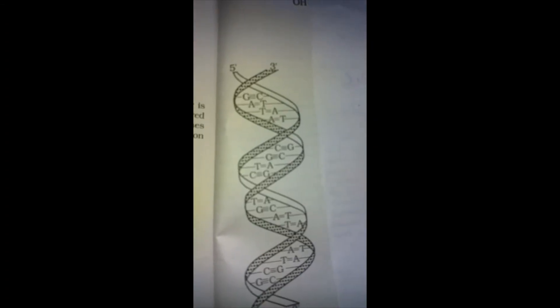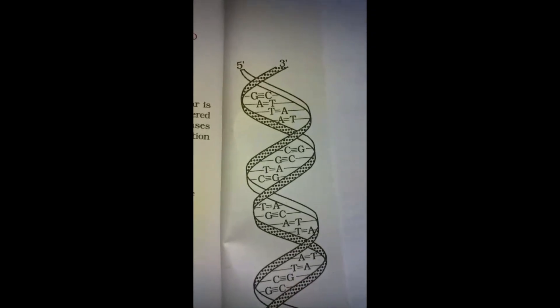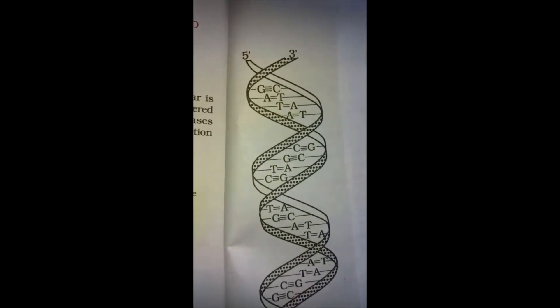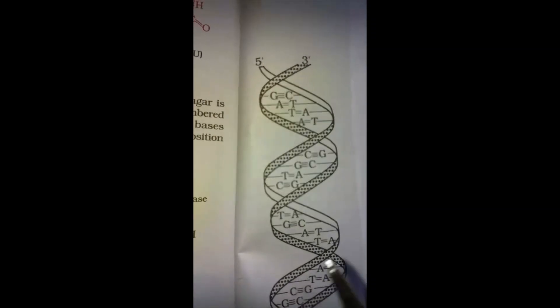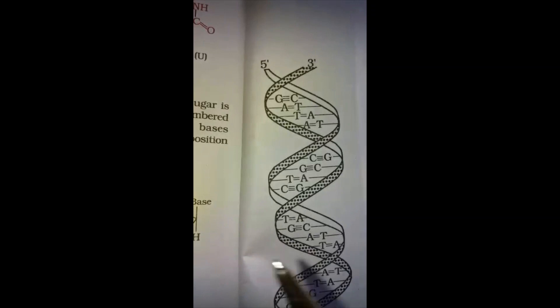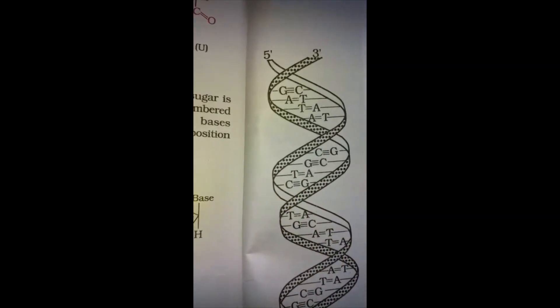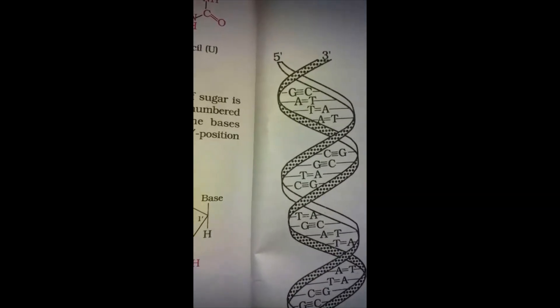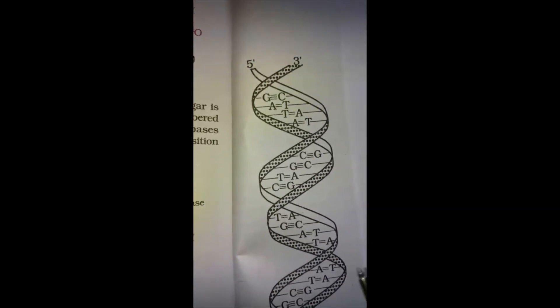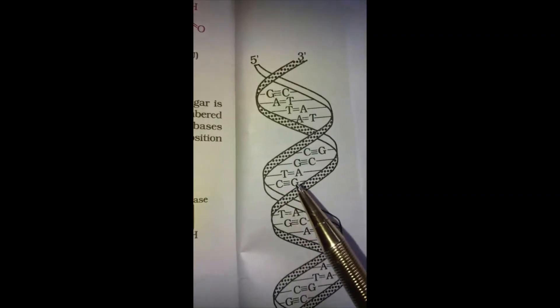This is the structure of DNA. Two nucleic acid chains are wound about each other and held together by hydrogen bonds between pairs of bases. The two strands are complementary to each other because the hydrogen bonds are formed between specific pairs of bases: adenine pairs with thymine and cytosine with guanine.